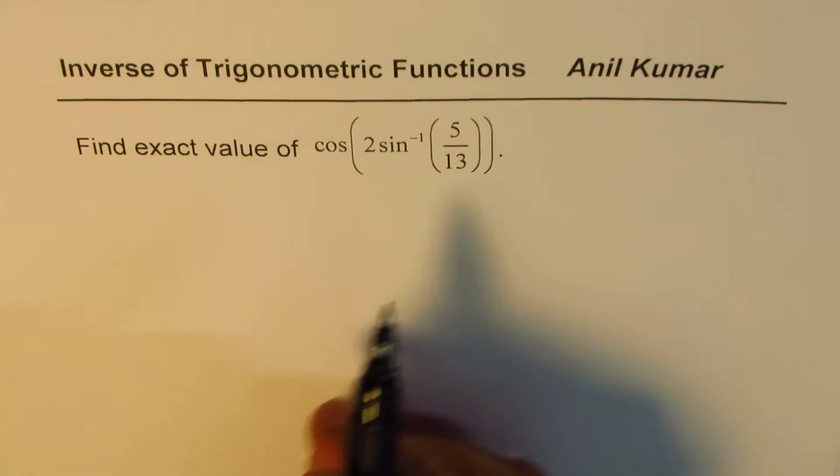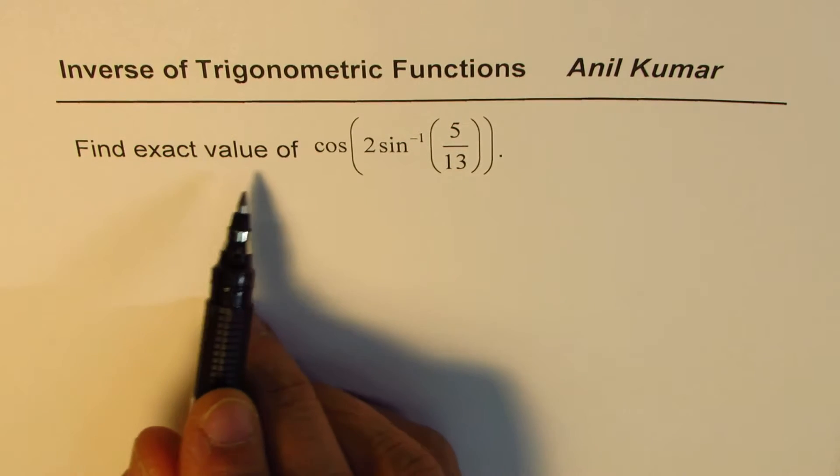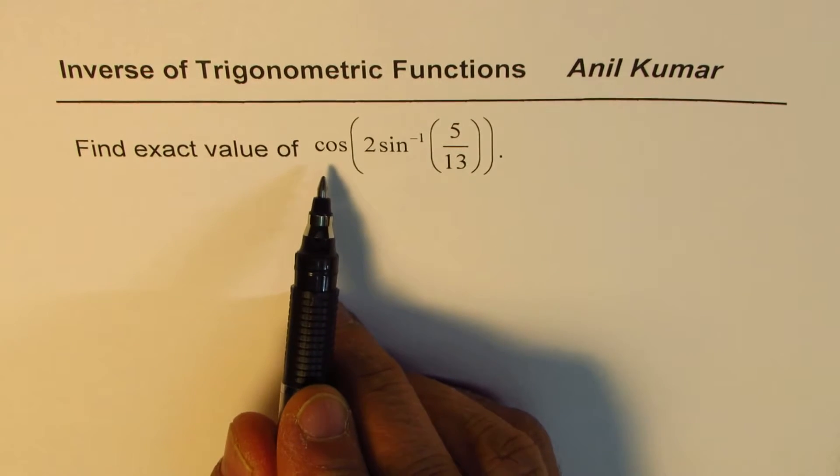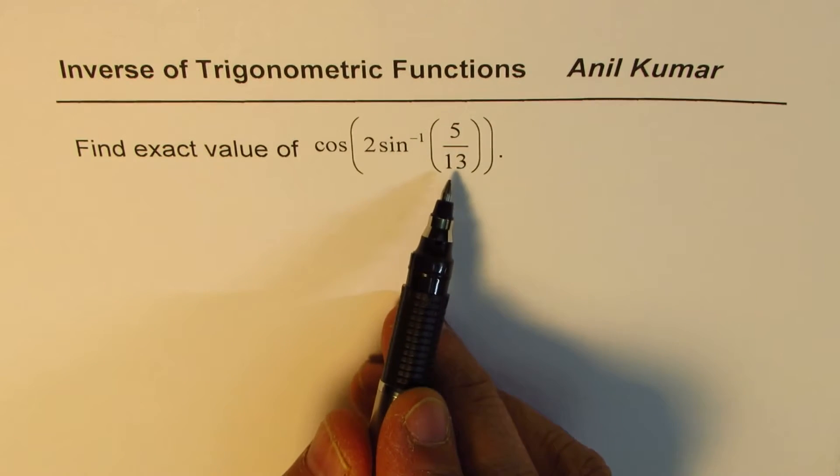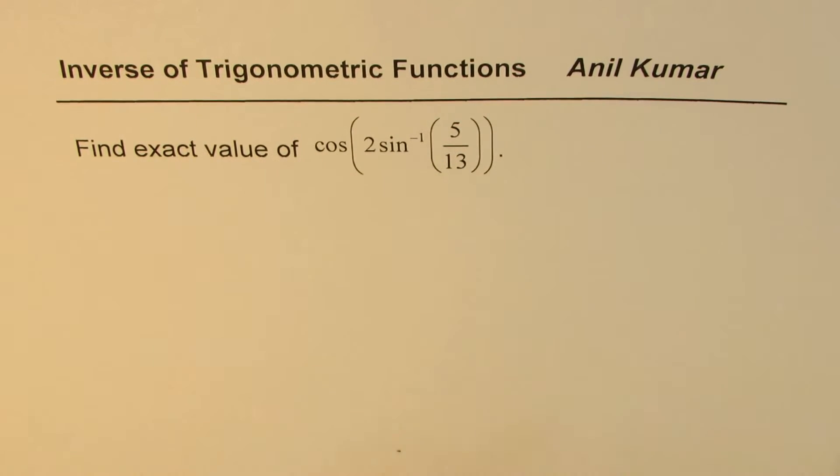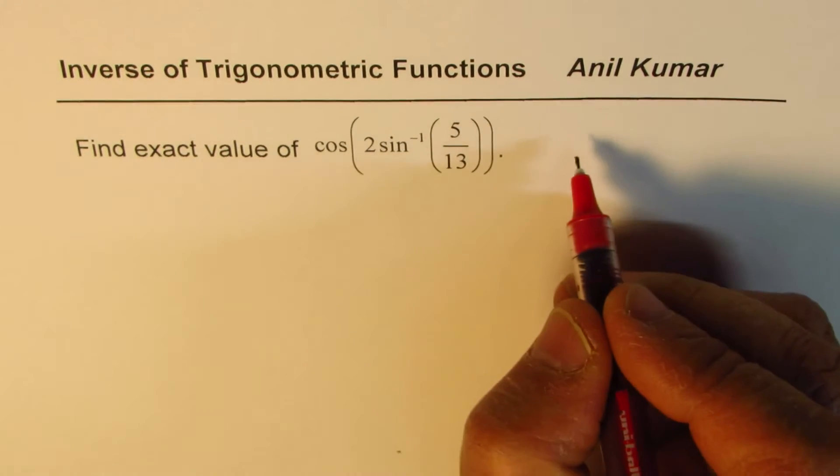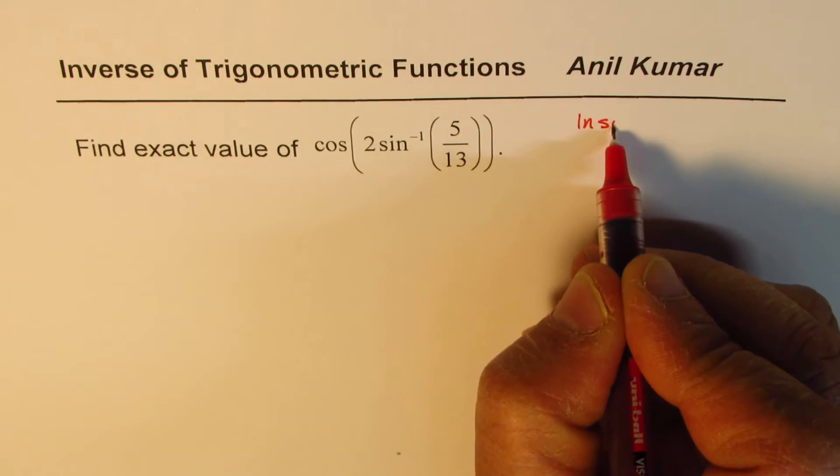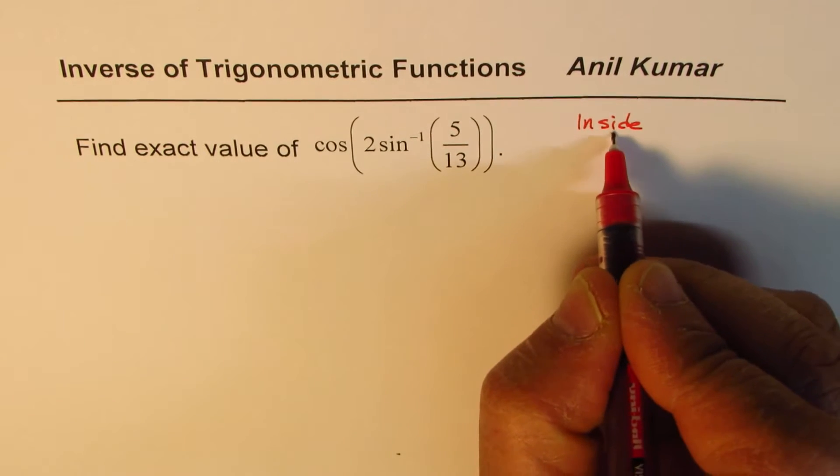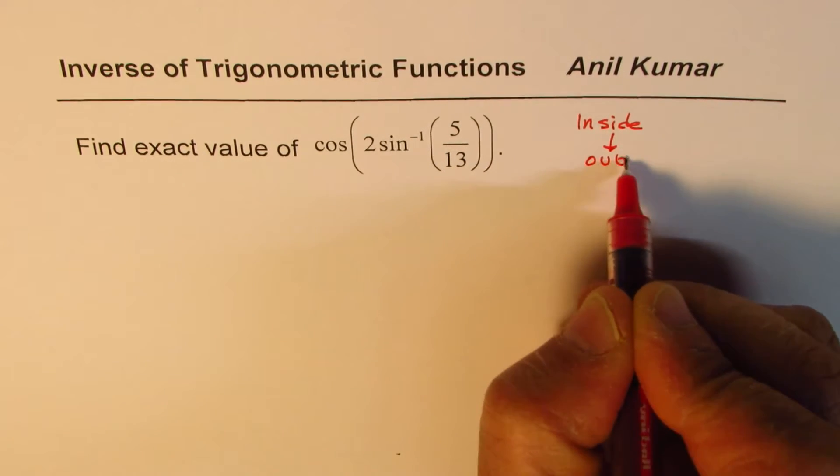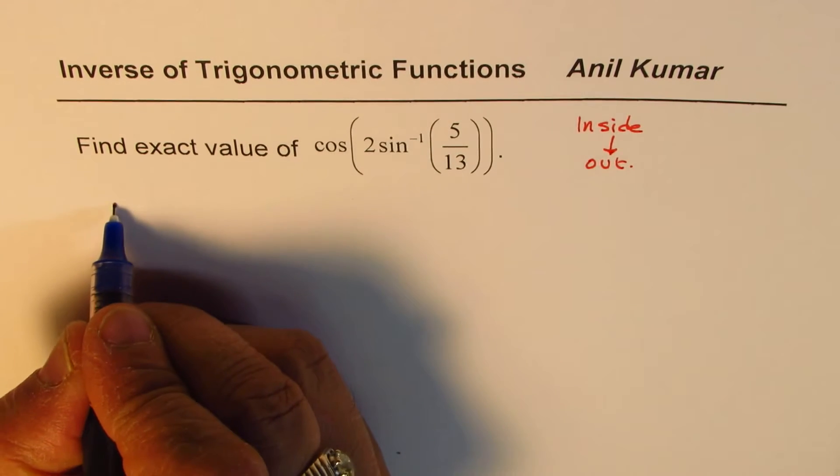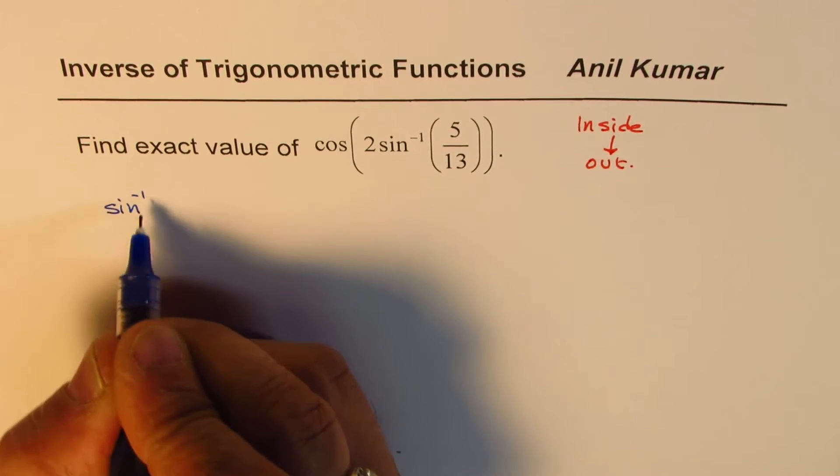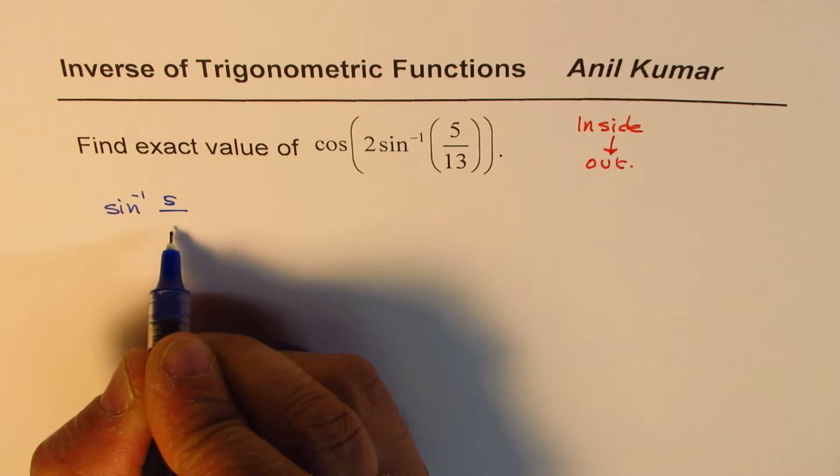So let's solve this question. It is find exact value of cos(2 sin^(-1)(5/13)). Now whenever you have a composite function like this, we should always start from inside out. That is the policy inside out. So the inside function given to us is sin^(-1)(5/13).